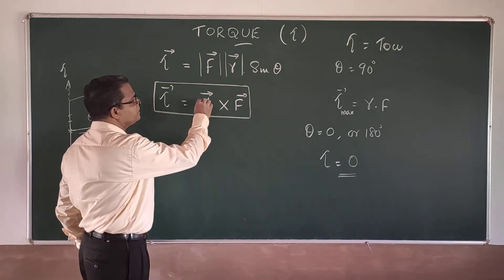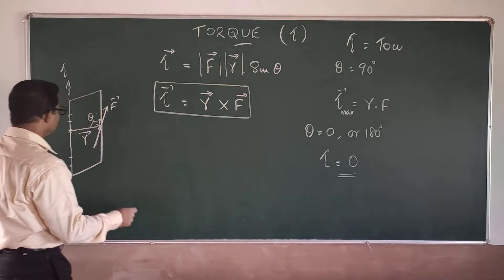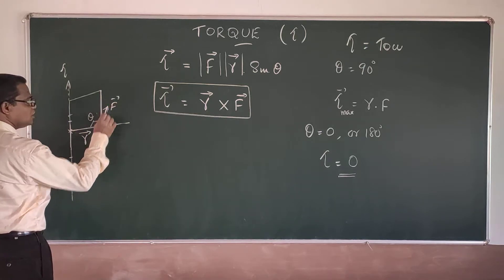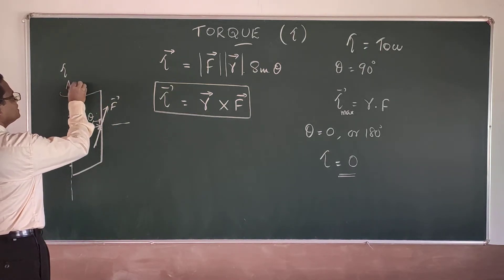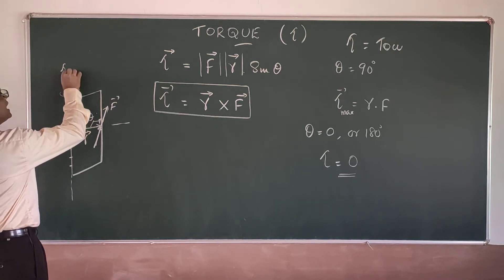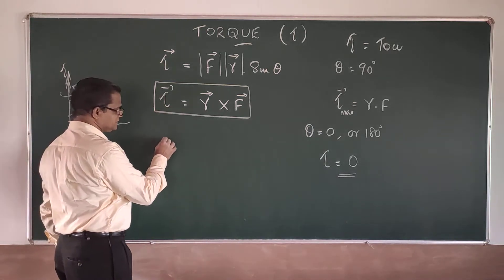And now we find the direction of the torque. Direction will be perpendicular to both R and F. Now you see, if R is coming along this way and F moves along this way, then the rotating effect goes like this through the axis. And if you reverse the force action from that way towards this, then the rotation will be opposite. So the direction of torque will be acting.